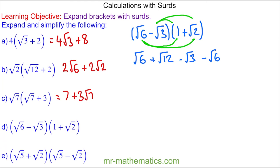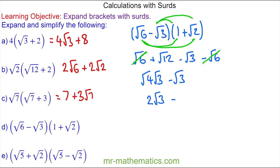You can see there is a positive root 6 and a negative root 6, which cancel to make 0. We can simplify root 12 as root 4 times root 3, and the square root of 4 is 2, so we have 2 root 3 minus root 3. Here we have two root 3's and we're taking one away, so we have one root 3 left.